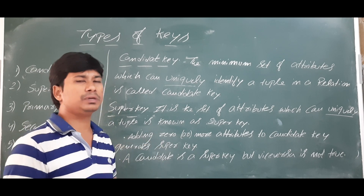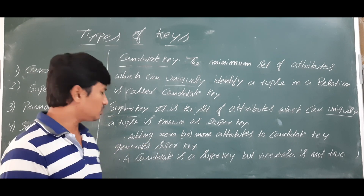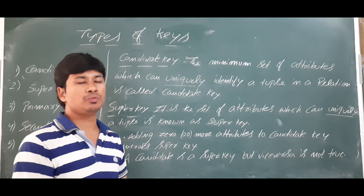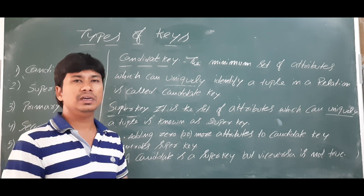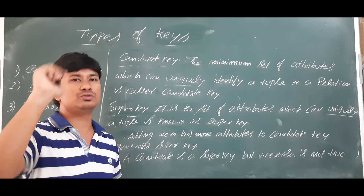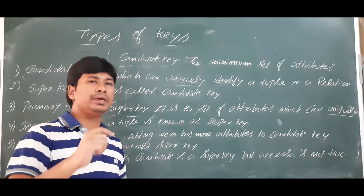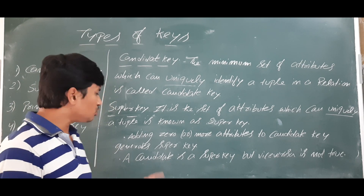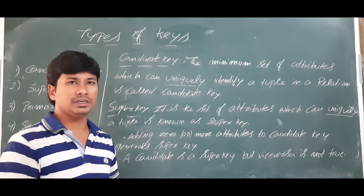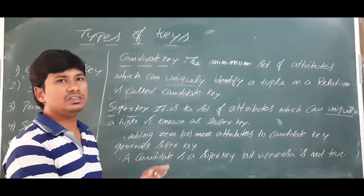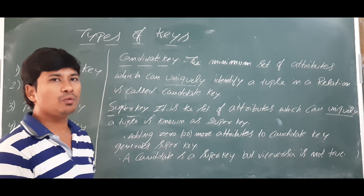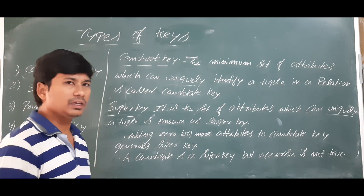A candidate key is a super key, because if you add zero attributes to a candidate key it remains a super key. However, the vice versa is not possible — a super key cannot always be a candidate key. The minimum of the super keys will become a candidate key, and a superset of a candidate key will act as a super key.